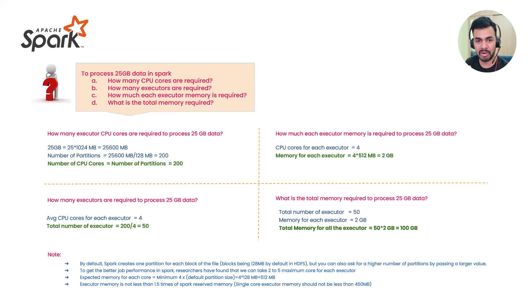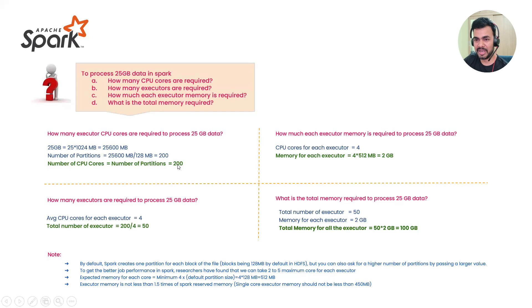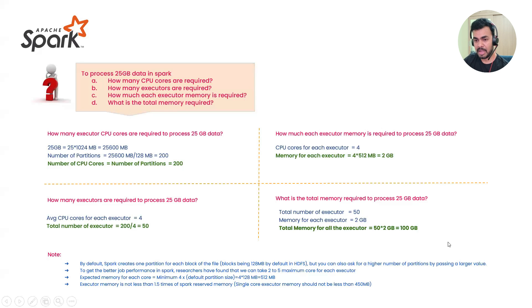To process 25GB of data with all tasks in parallel, you need a minimum of 100 GB. As a quick thumb rule: take the number of cores (200), multiply by four to get memory in MB per core (512 MB), then derive executor memory and total memory accordingly. This isn't a fixed answer but a useful calculation guide.